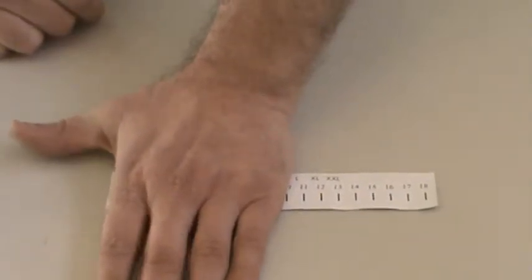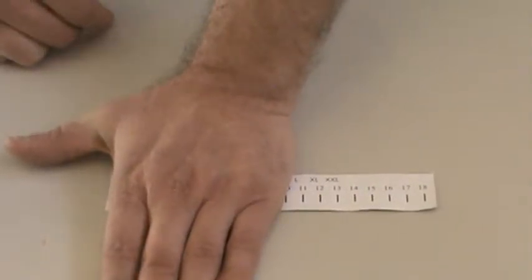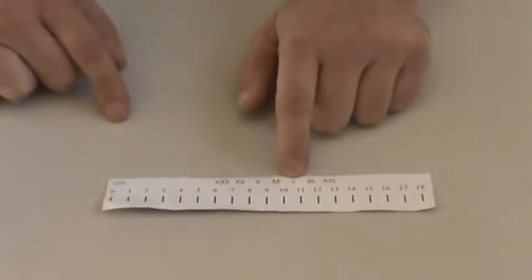I have a little cheat sheet here, but you can print these out online too. You can just go online and find one. I'm about 10.5 cm, which would put me right in the large area.